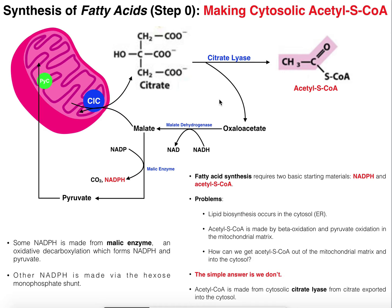First of all, the entire process of fatty acid synthesis occurs in the cytoplasm. There are some things that do occur on the smooth ER membrane, but generally speaking it's outside of the mitochondria. Recall that beta-oxidation, which is the catabolism of fatty acids — the breakdown of them for energy — occurs in the mitochondria, specifically the mitochondrial matrix. It would not make sense to have the biosynthetic pathway in the same compartment as the catabolic pathway. So catabolism occurs in the mitochondria and synthesis occurs in the cytoplasm and the smooth ER, but kind of the same general area.